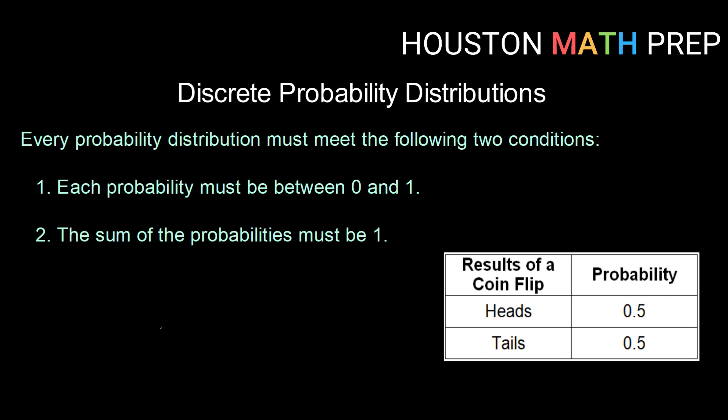Every probability distribution must meet the following two conditions and we're going to look at some examples of discrete probability distributions and check out how do we tell if they meet these conditions and what does that mean.